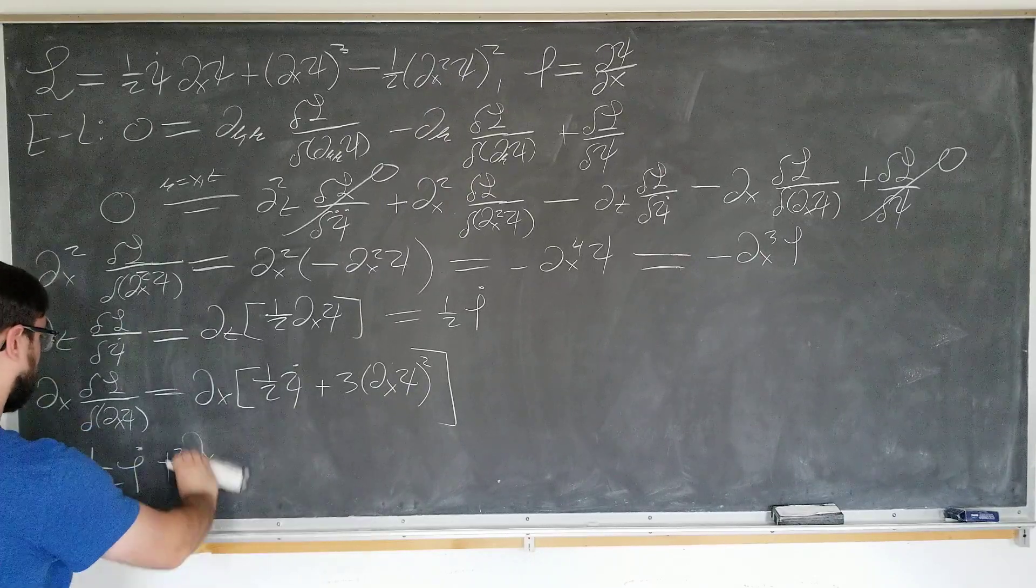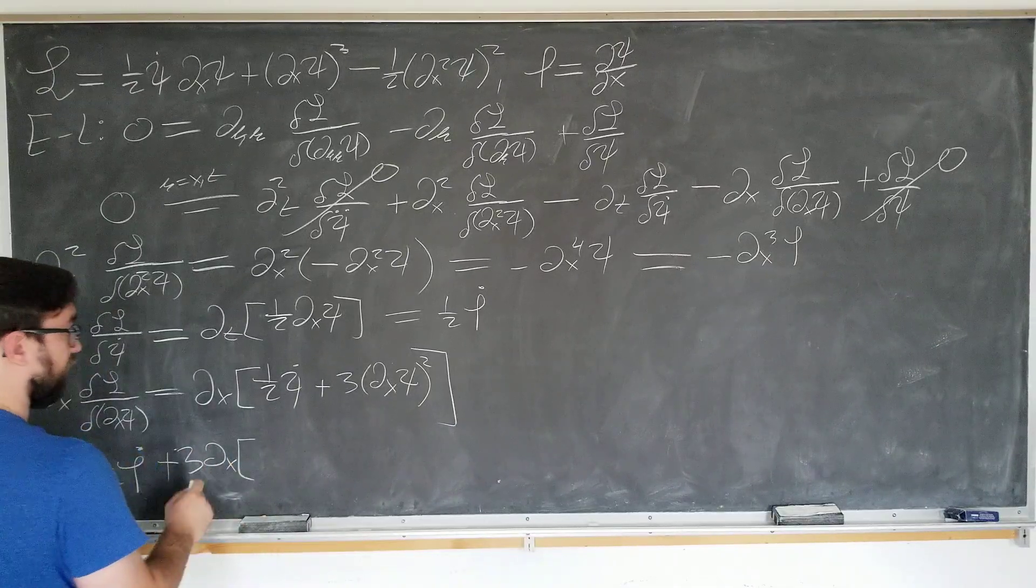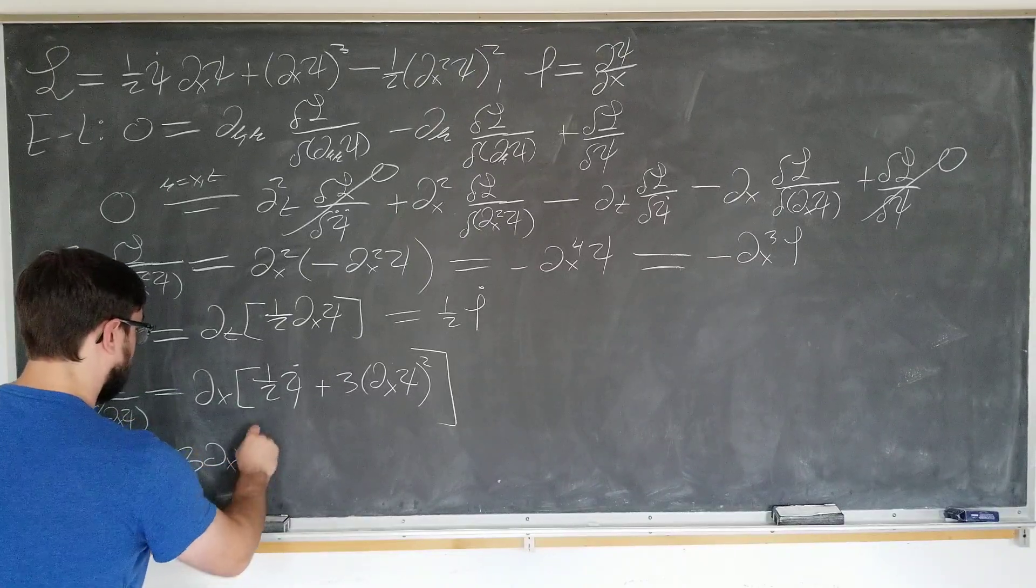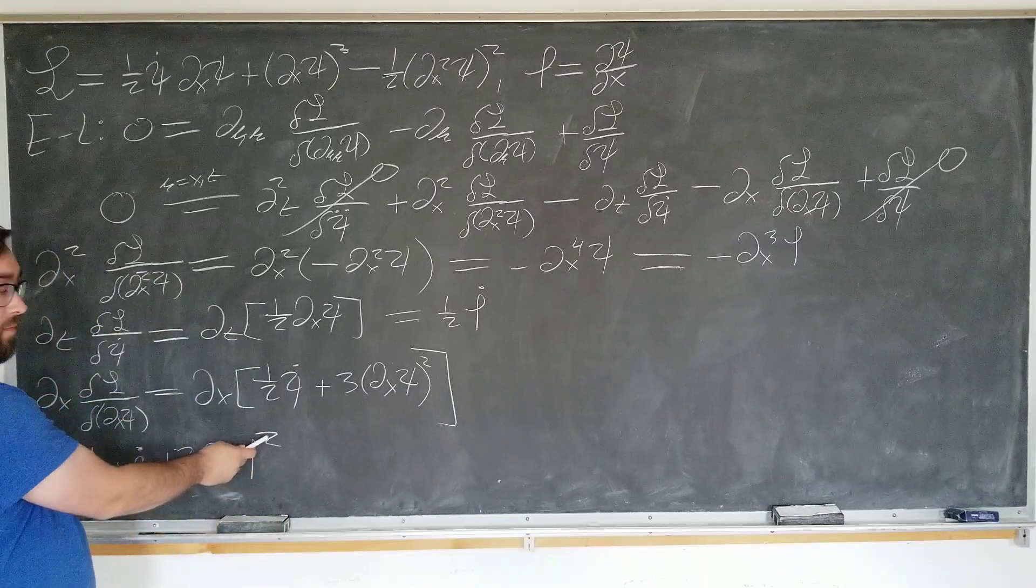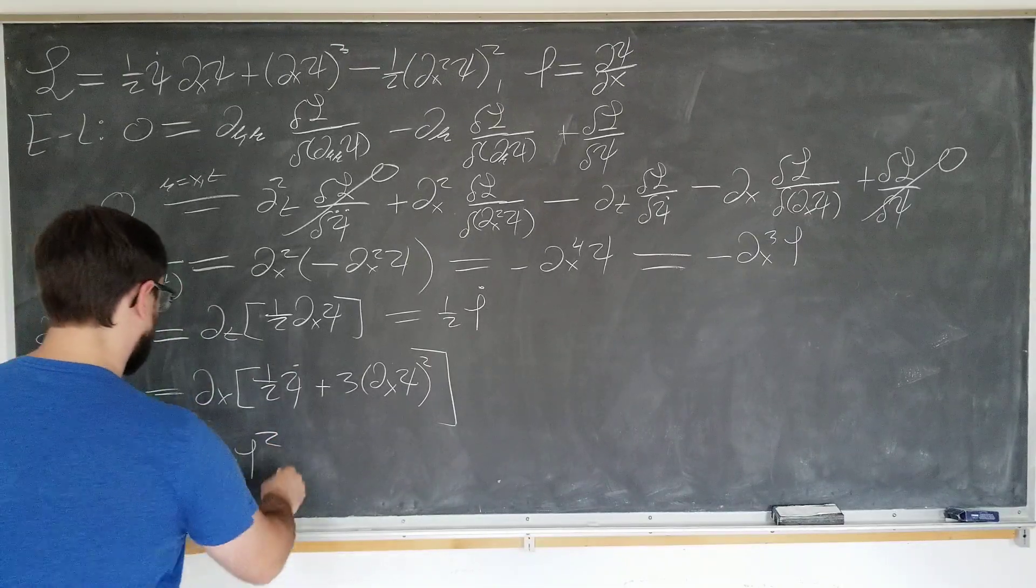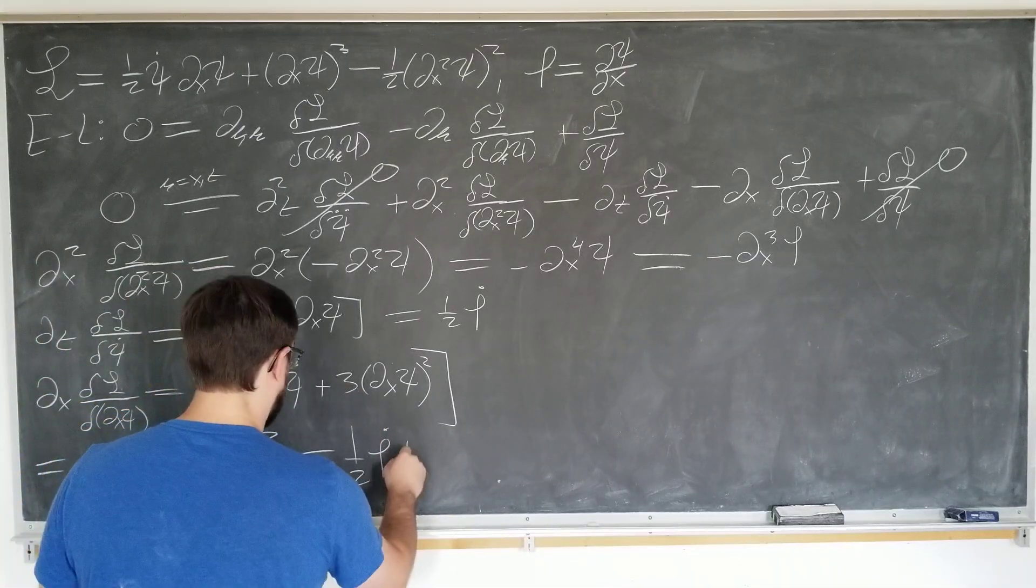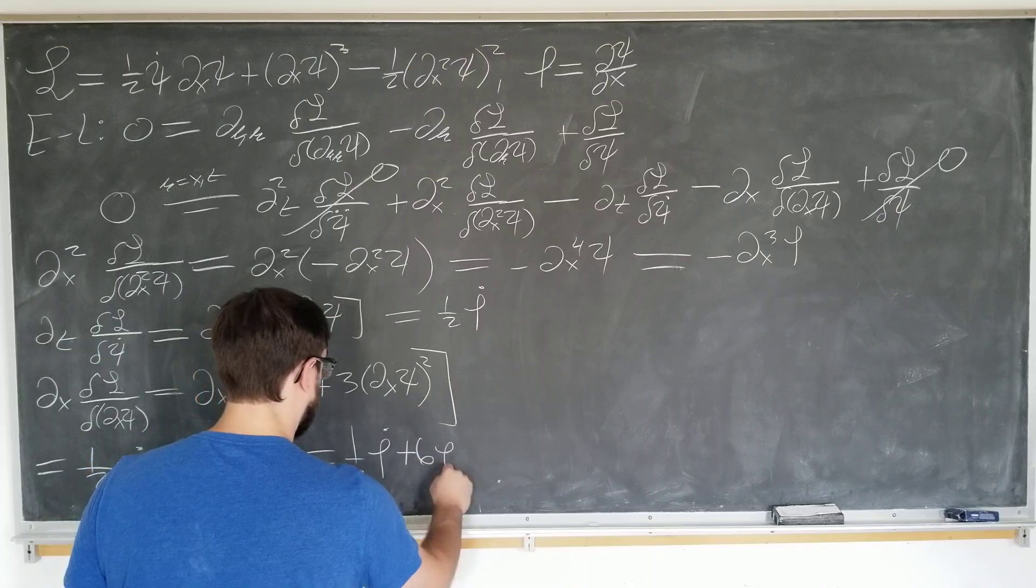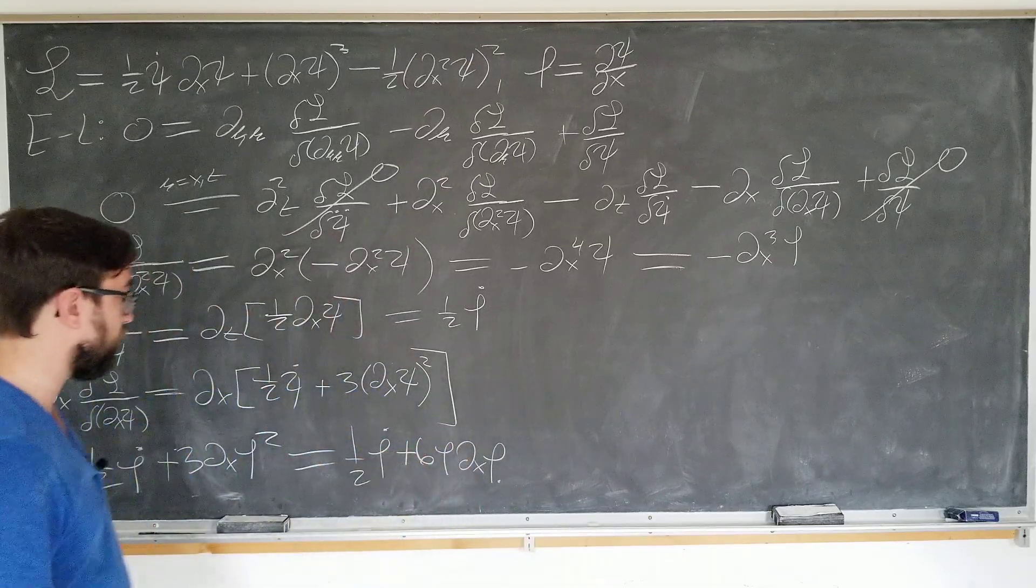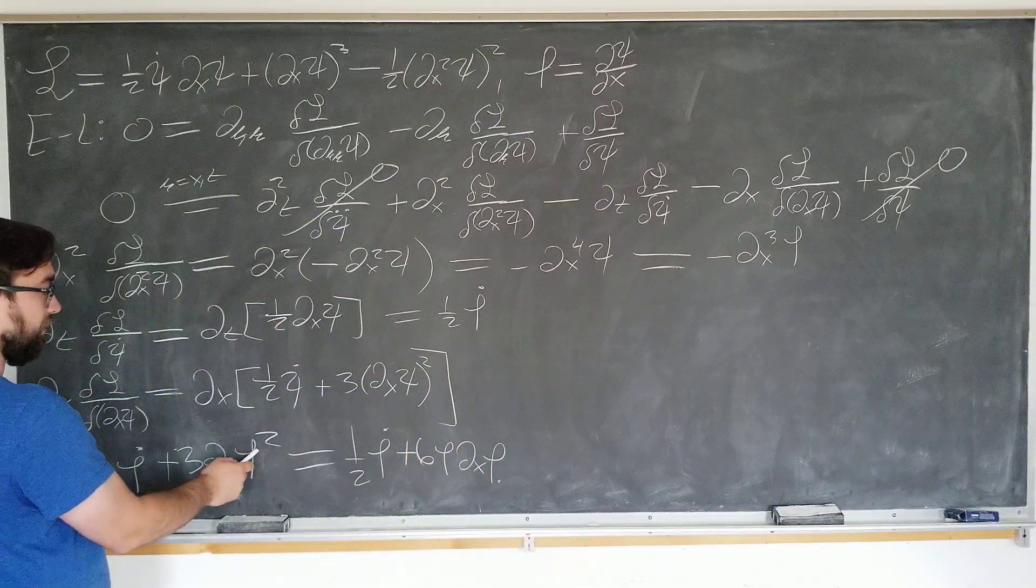It's going to be space derivative of, well, three. Three times the space derivative. Three times the space derivative of phi squared. We just use the power rule again to take the two down, which is where the six comes from. Very important. This is just one-half phi dot plus six phi dx phi. And there's where the six comes from.